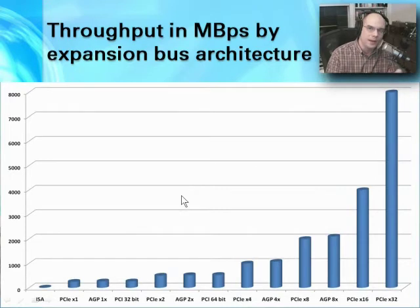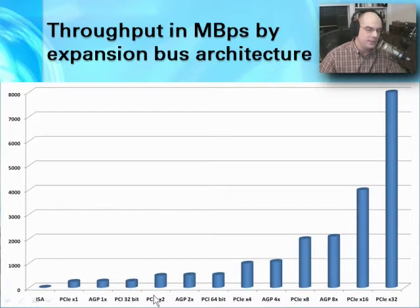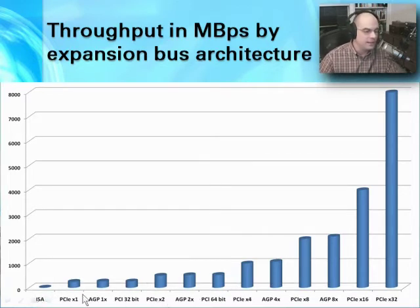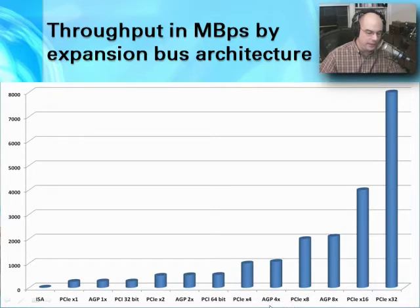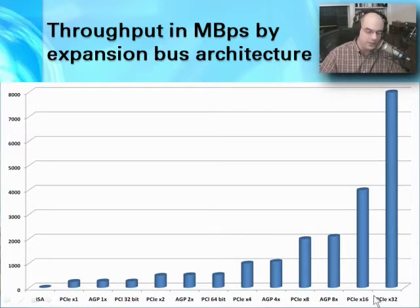If we want to compare what these different interfaces look like in terms of throughput, here's a chart. It starts down with ISA and goes up to PCIe x1. We then move up to AGP, and we really start getting into higher speeds. Even AGP 8X goes quite fast. But the fastest interfaces on a motherboard today are PCI Express x16, and if you can find a motherboard supporting x32, you can really get some very high speed throughputs.